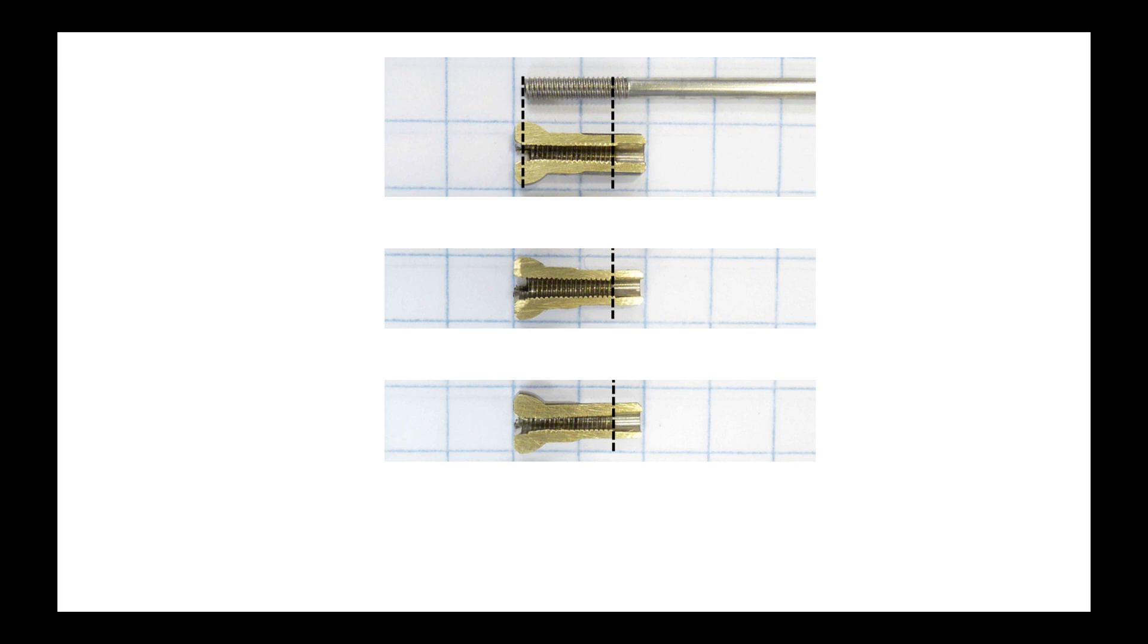The top picture is with the spoke reaching the bottom of the slot. The next picture would be the spoke reaching the end of the slot or the end of the nipple, and the third picture is where the spoke extends past the end of the nipple.